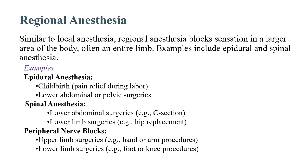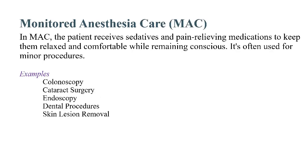Regional anesthesia is similar to local anesthesia but blocks sensation in a larger area of the body — often an entire limb. Examples include epidural anesthesia, used during childbirth for pain relief during labor, and for low abdominal and pelvic surgeries. Spinal anesthesia is used for lower abdominal and lower limb surgeries. Peripheral nerve blocks are also used for upper and lower limb surgeries.